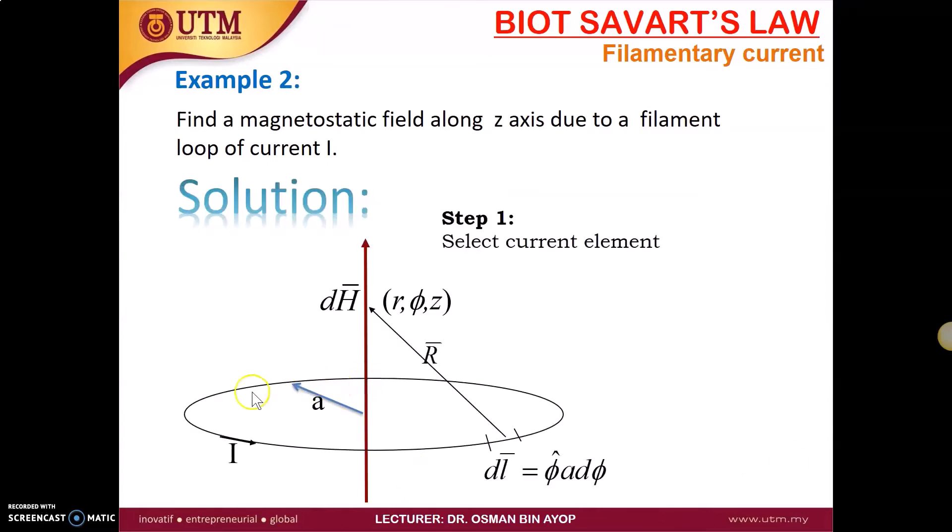You have the loop current, so the current going along the phi direction and we want to find what is the H field along Z axis.